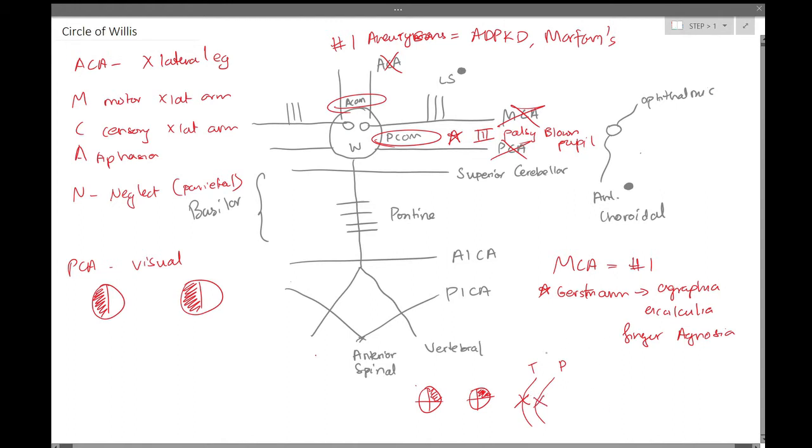And if you have a parietal lesion, so again, this is still the MCA, this will give us our pie on the floor, which is contralateral inferior quadrantanopia.